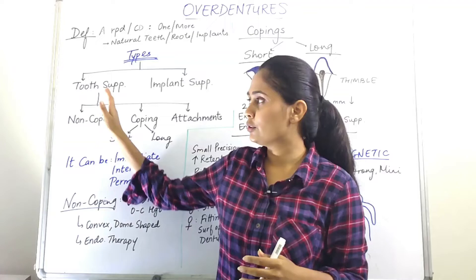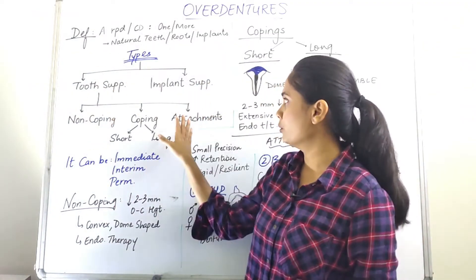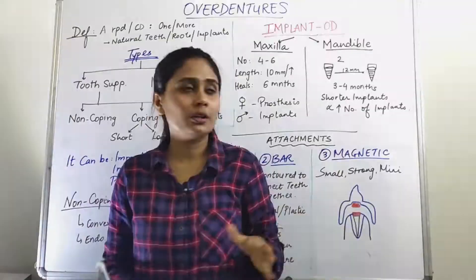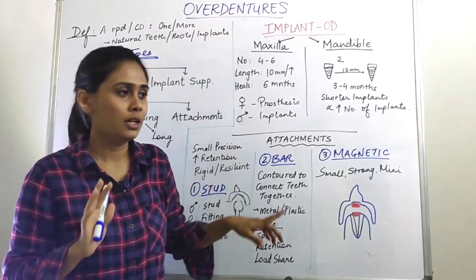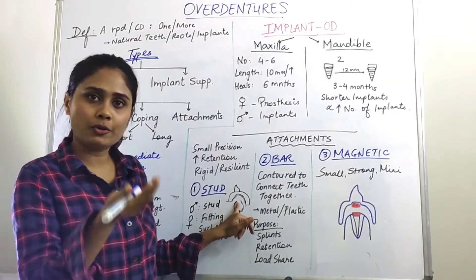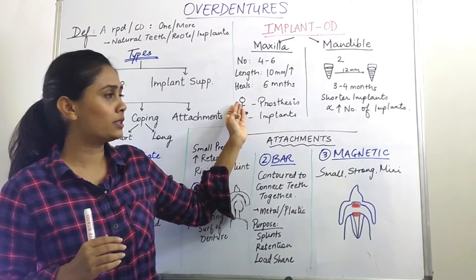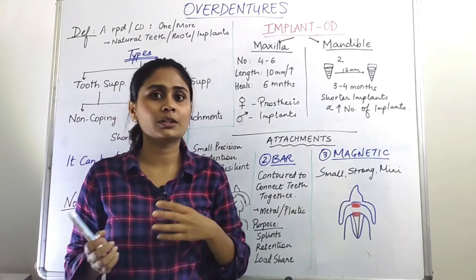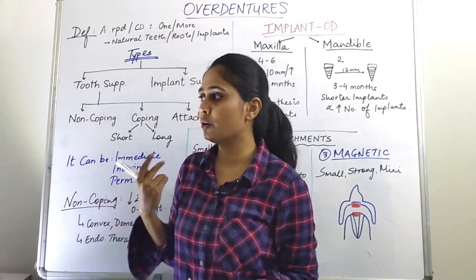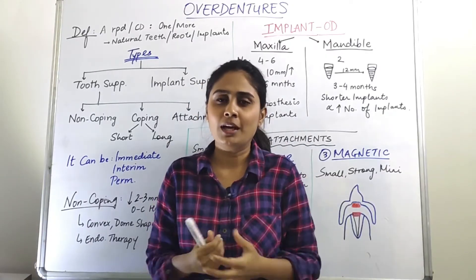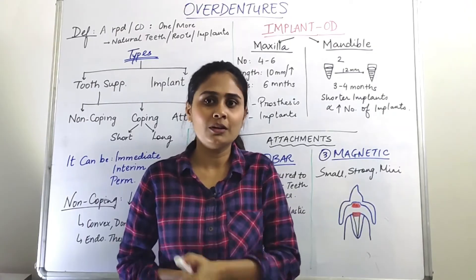That covers tooth-supported non-coping, coping, and attachment type overdentures. Now for implant-supported overdentures: here also we have a male and female component — the female component is the prosthesis while the male component is the implant, which protrudes over the ridge. In implant-supported overdentures, the attachments used include ball or bar-and-clip type. I hope you understood what I tried to convey. If you have any doubts, you can contact me on my Instagram ID: rohi_maniar, which I'll put in the description box below. Thank you for watching.